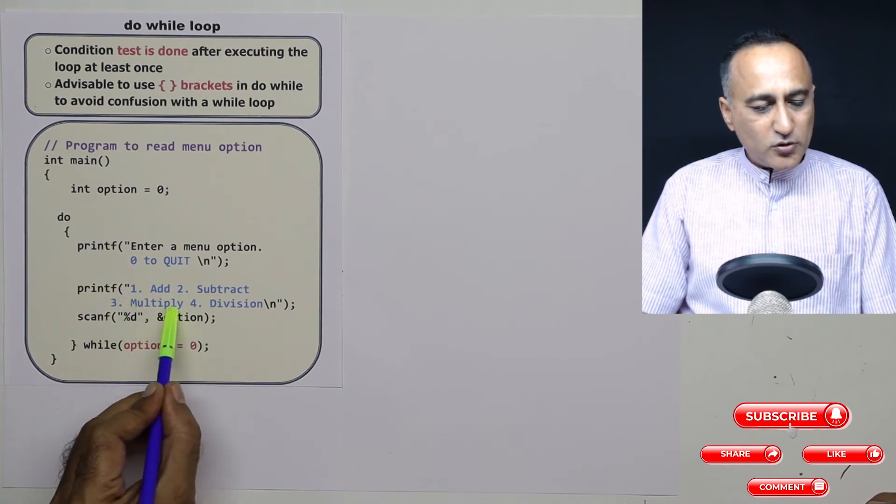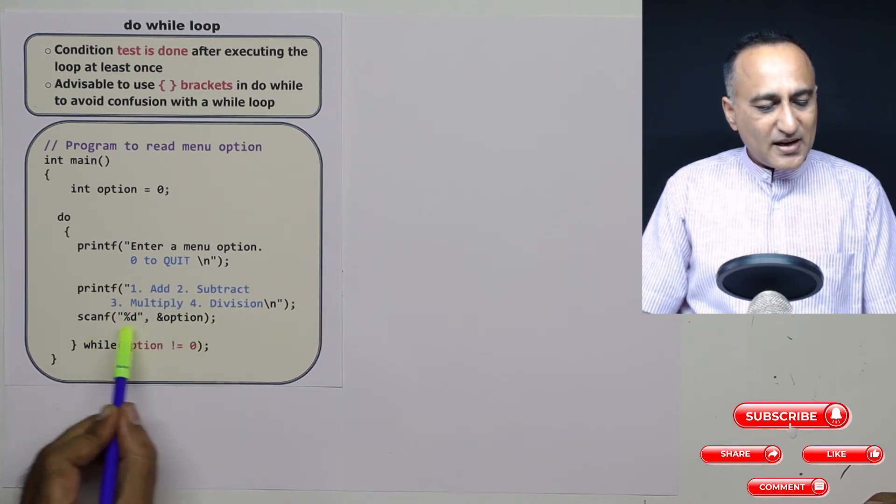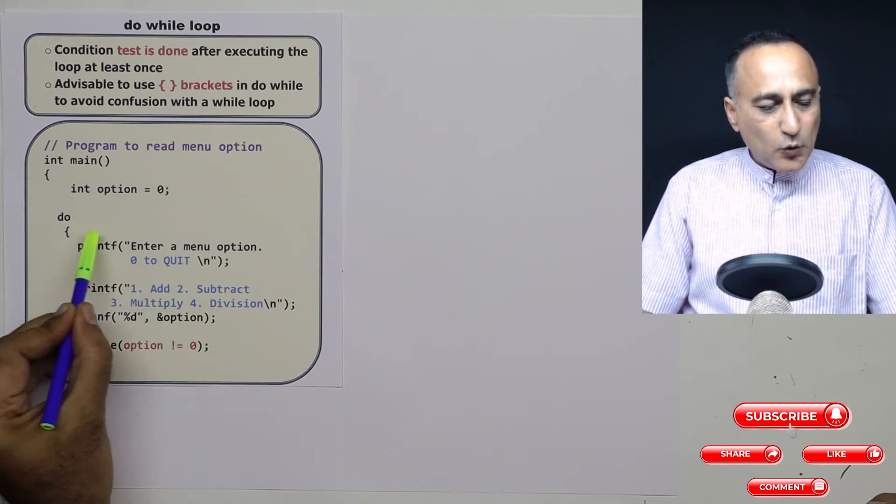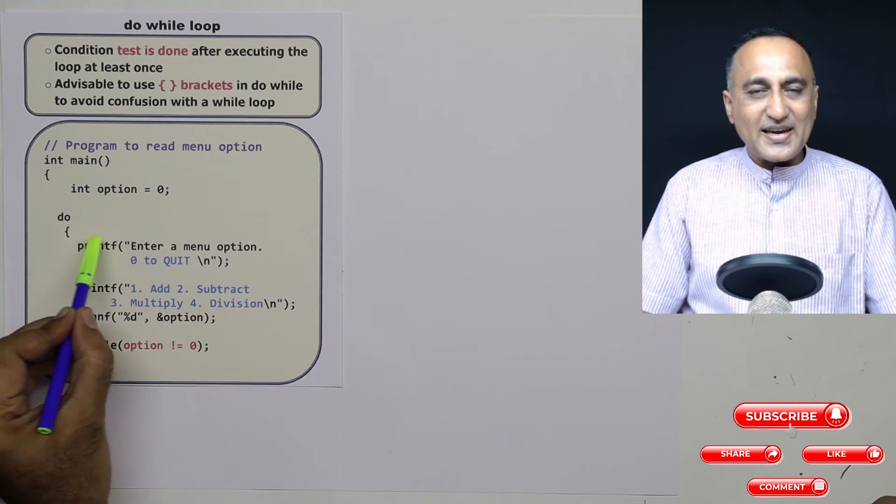So the user can enter one, two, three, or four. And then I'm reading the option. As long as the option is not zero, it will keep doing this body of statements again and again.